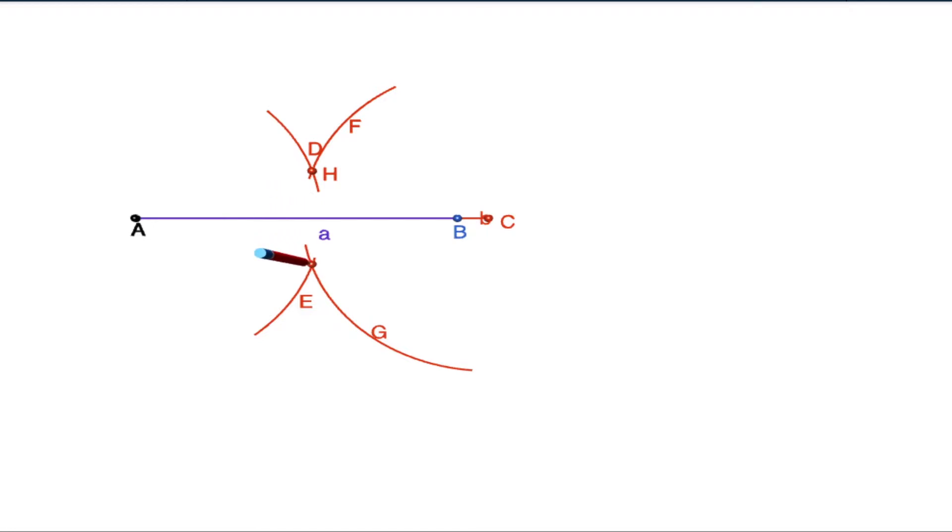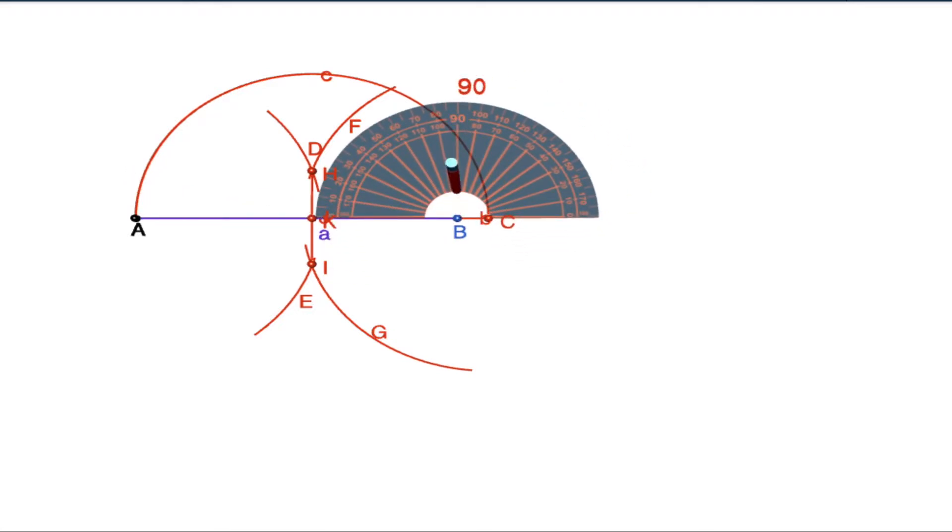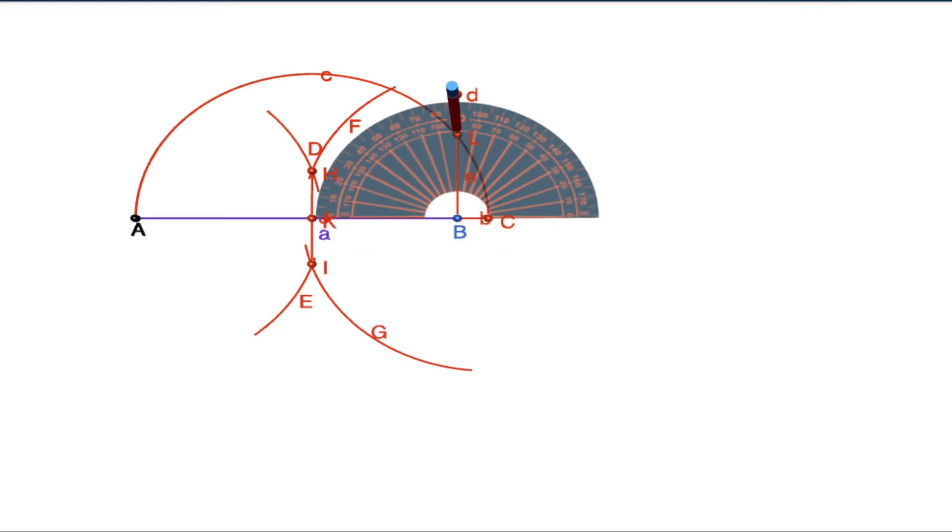With K as center and radius KA or KC, both are radius of the circle, so we draw a semicircle. At B, we construct a 90-degree angle with compass. We join BL. L is a point on the circumference of the semicircle, and BL is √10.4.